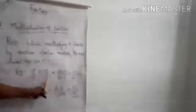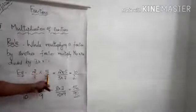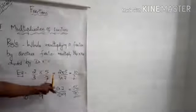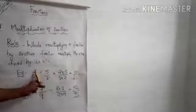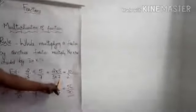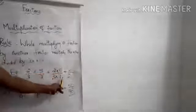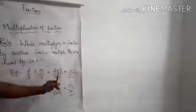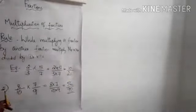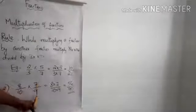Example: 2/3 into 5/7. Here the numerators are 2 and 5, and the denominators are 3 and 7. Multiply directly: 2 into 5 divided by 3 into 7. 2 into 5 is equal to 10, and 3 into 7 is equal to 21, so the answer is 10/21.